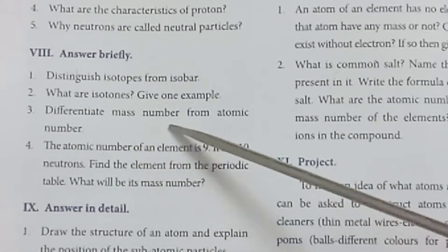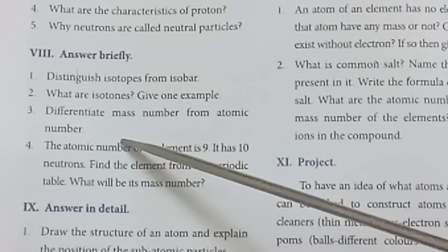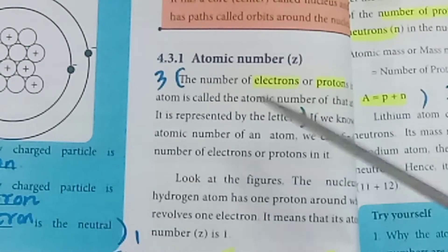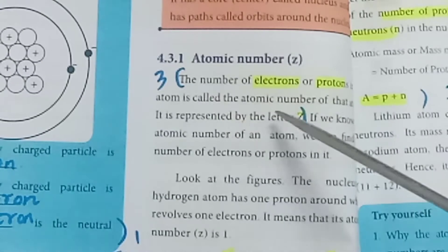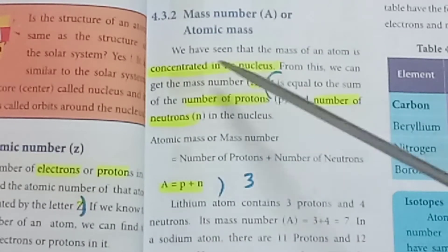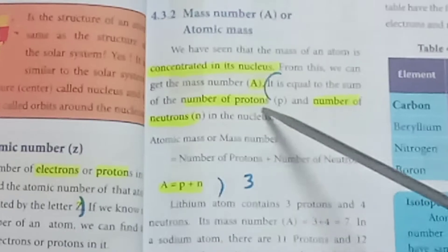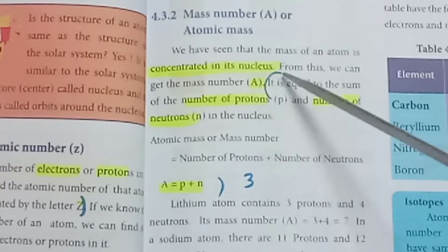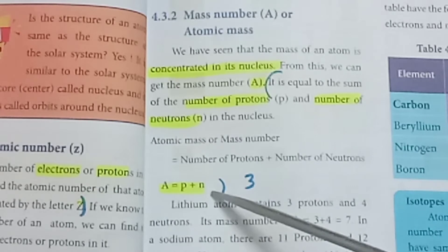Third question: differentiate mass number from atomic number. Page number 46 for atomic number, first three lines. Page number 47 for atomic mass. It is equal to the sum of the number of protons and the number of neutrons. A equals P plus N.